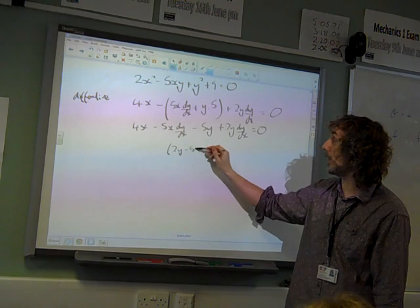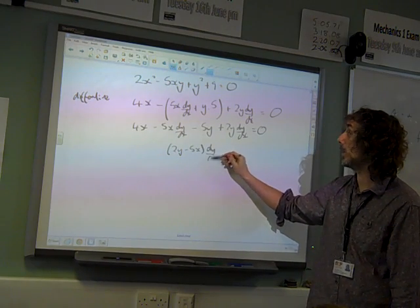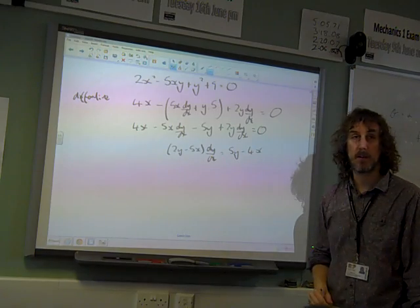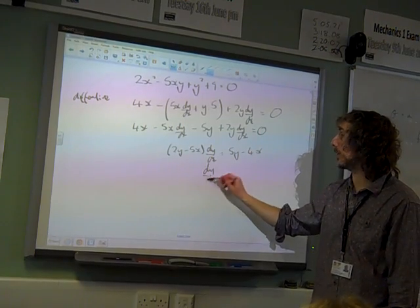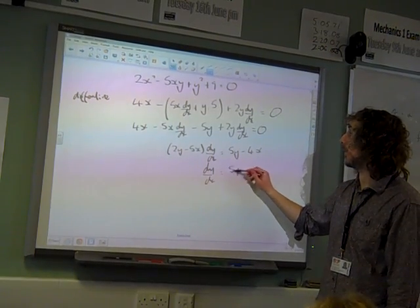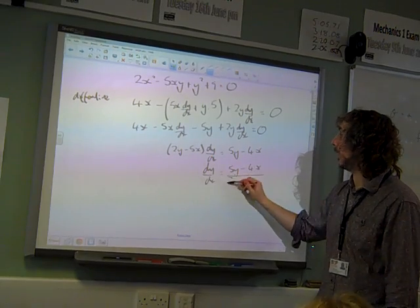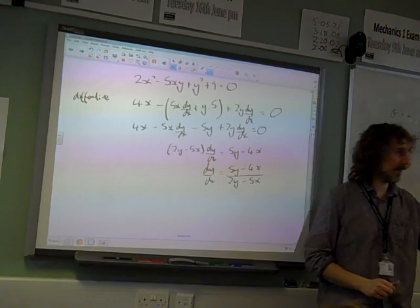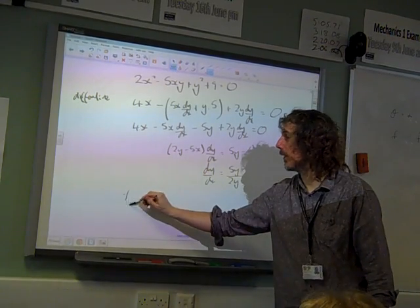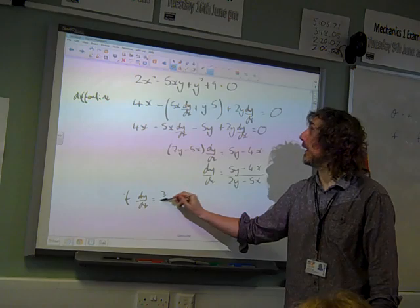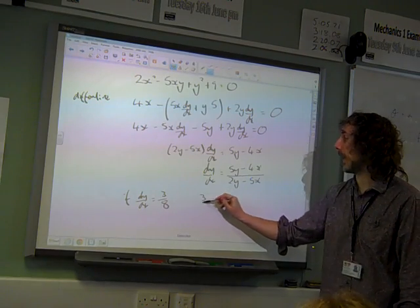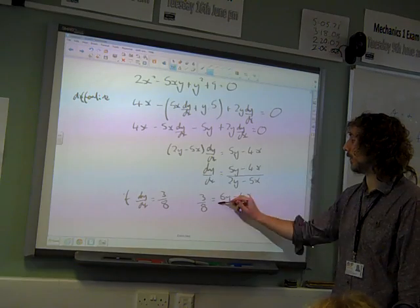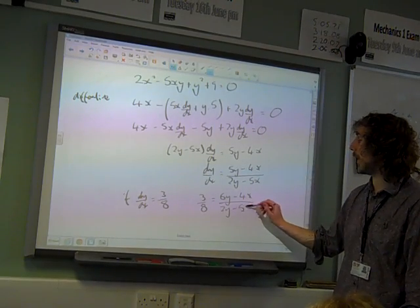So 2y minus 5x dy/dx equals 5y minus 4x. So dy/dx is (5y minus 4x) over (2y minus 5x). We're looking for when dy/dx is 3/8, which means 3/8 equals (5y minus 4x) over (2y minus 5x).